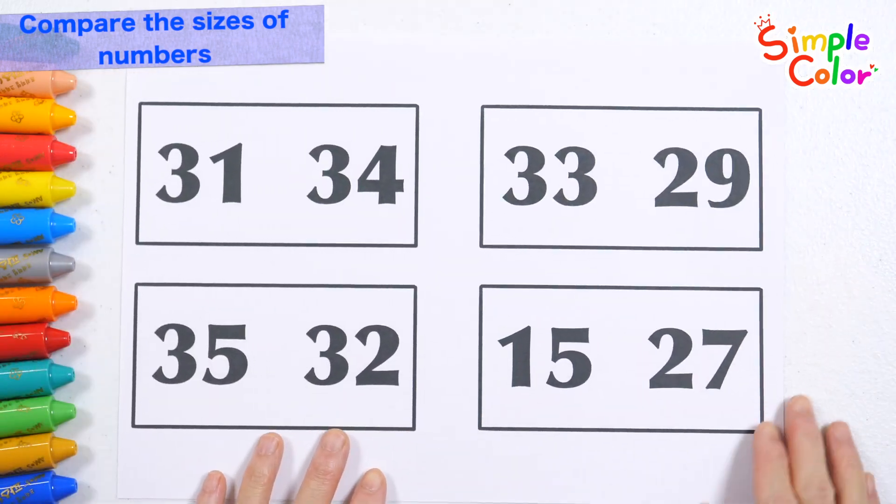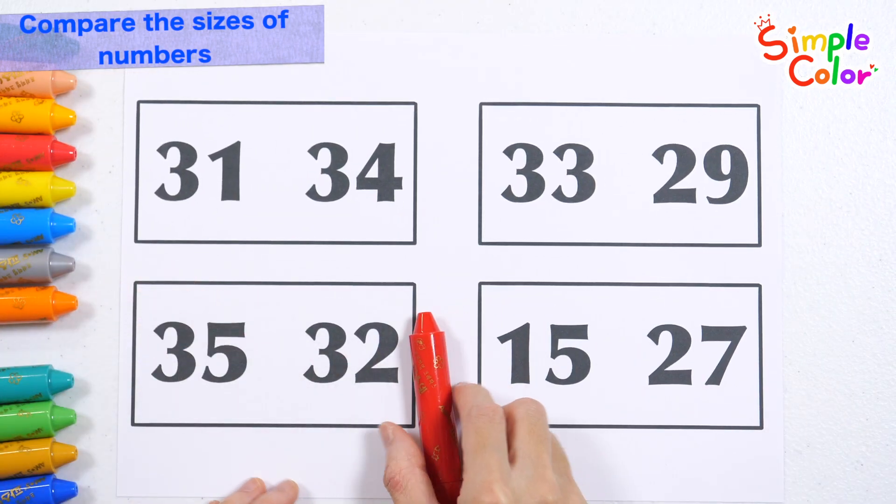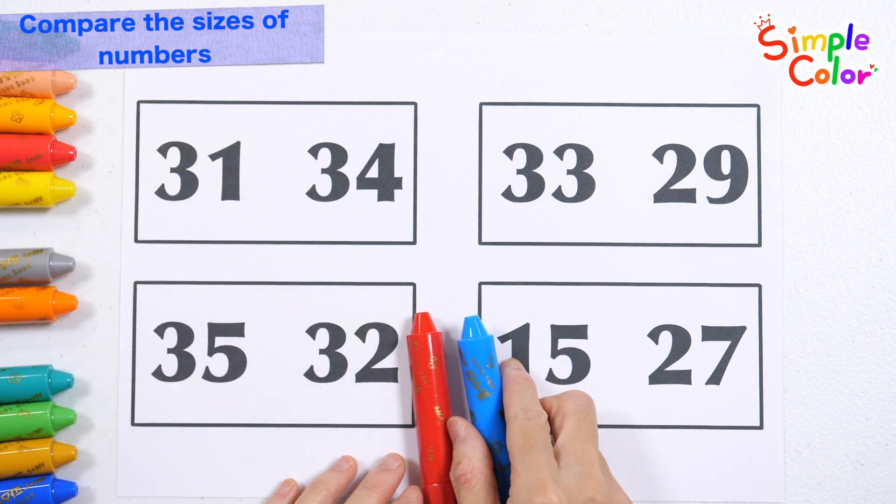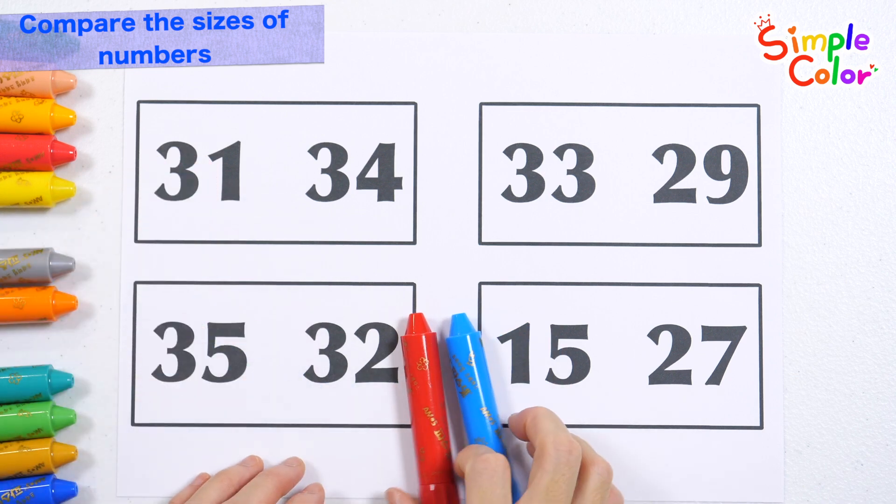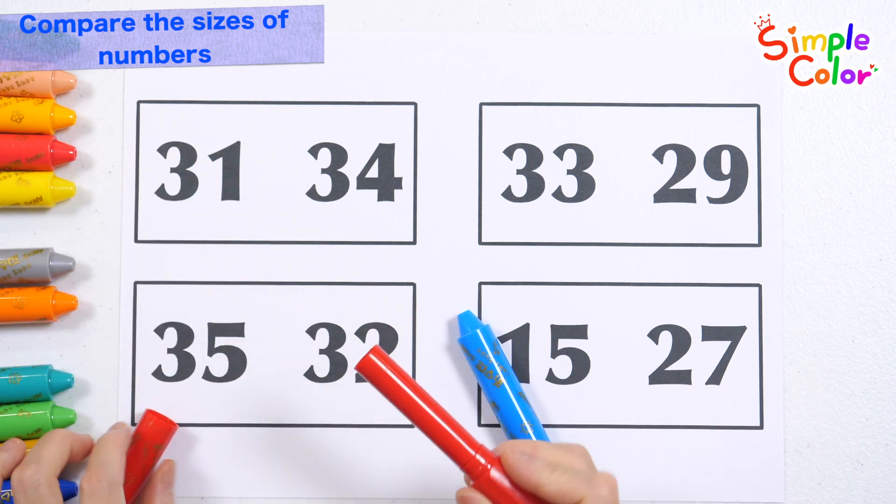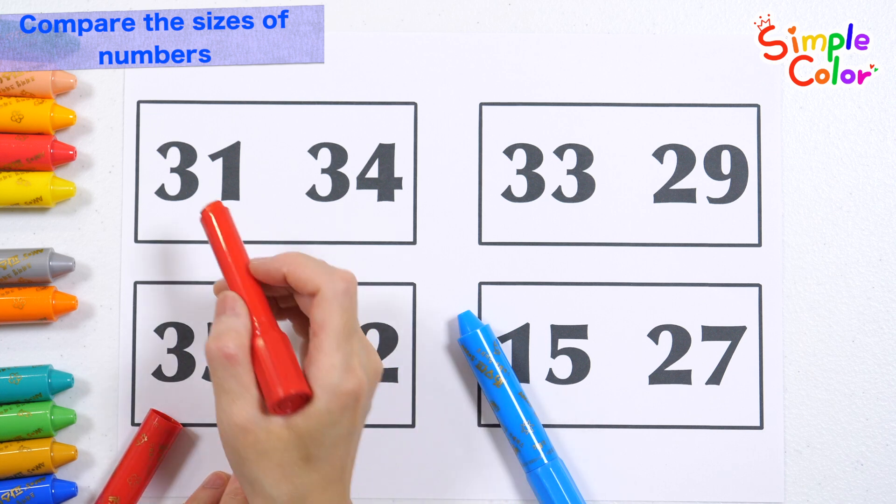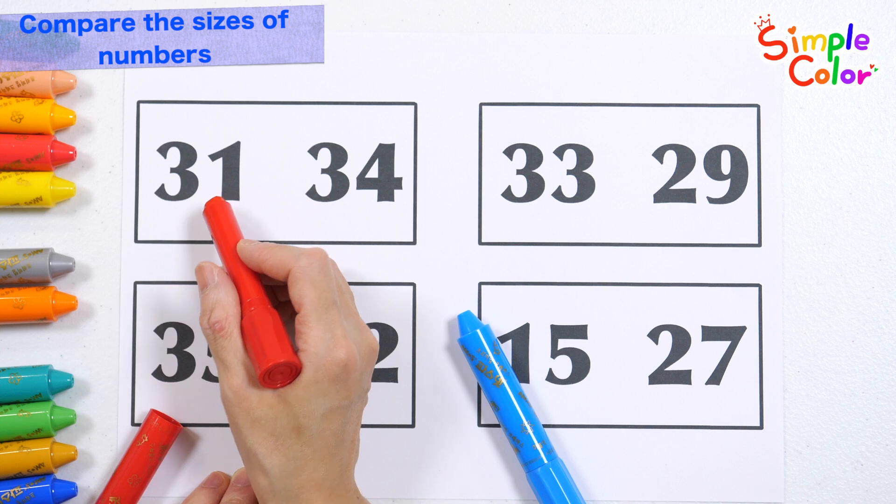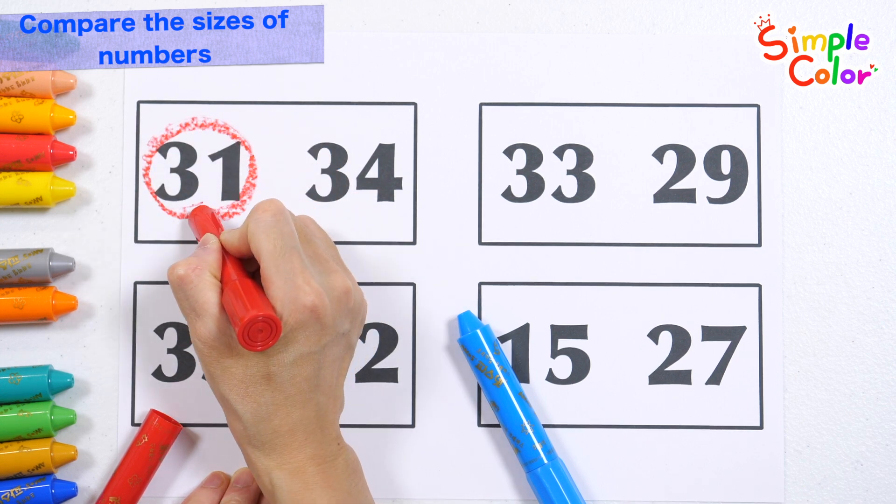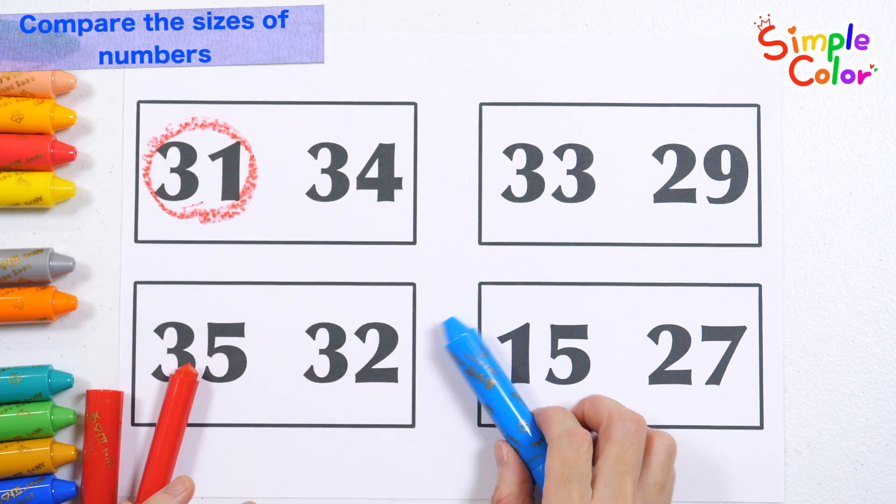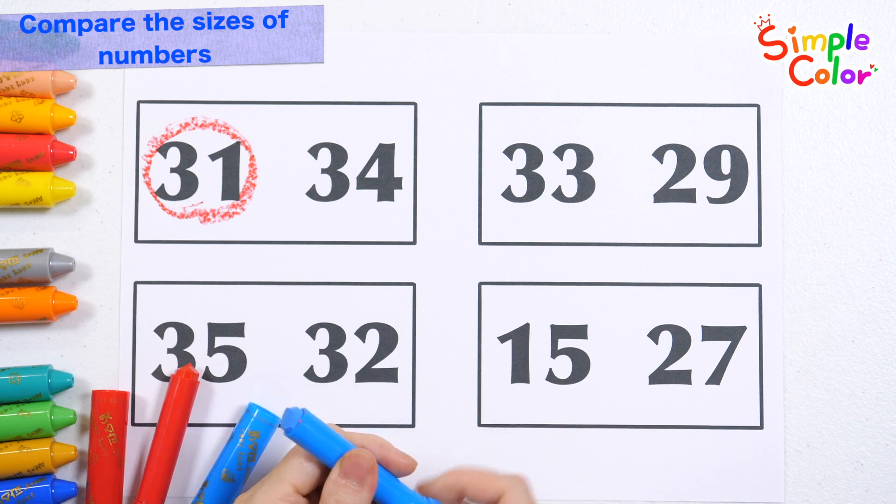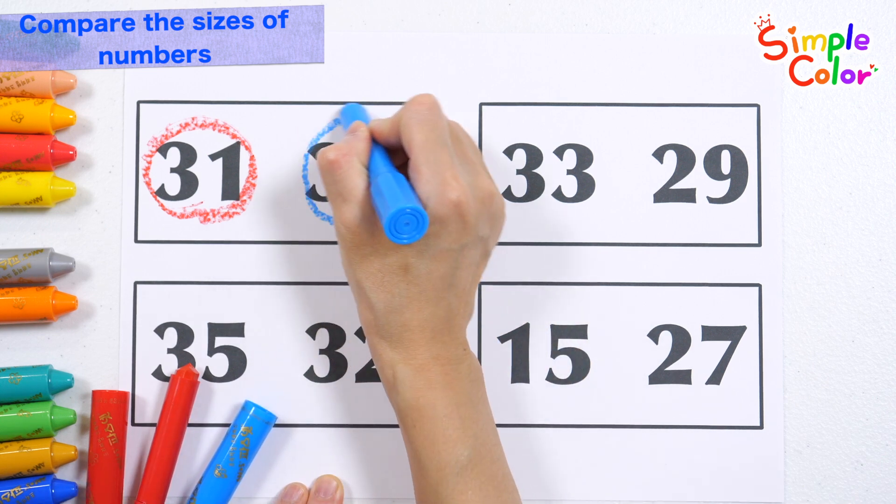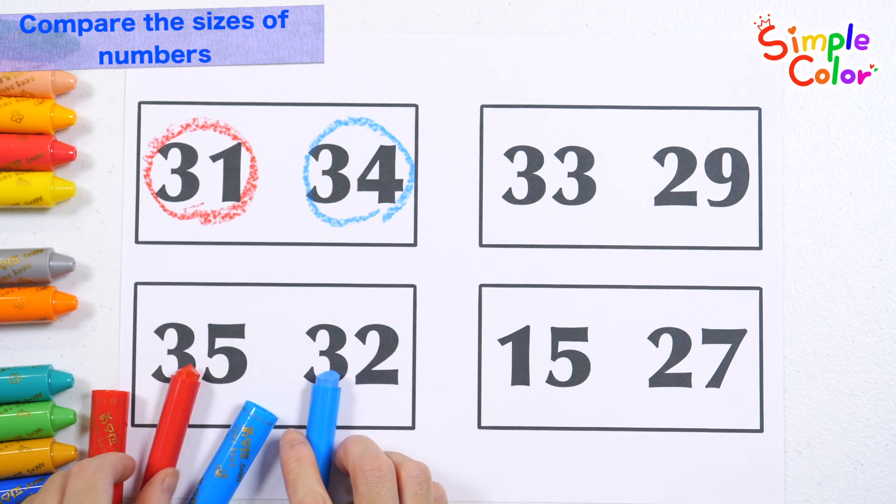Let's circle the smaller number with a red crayon and the larger number with a blue crayon. Small number 31, big number 34.